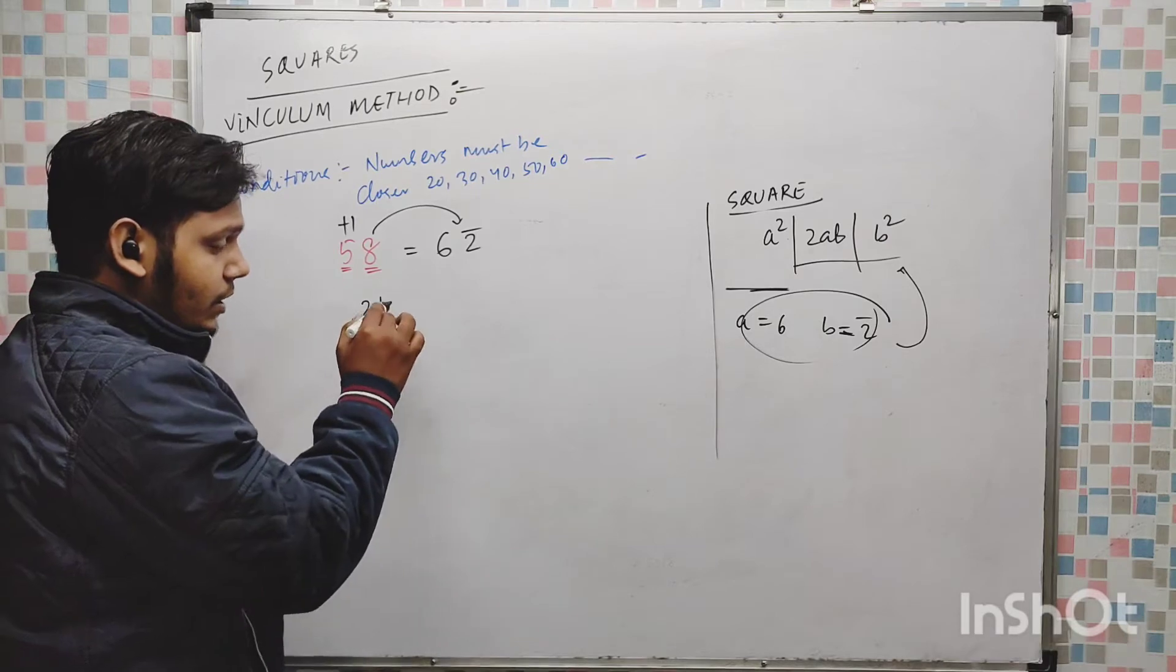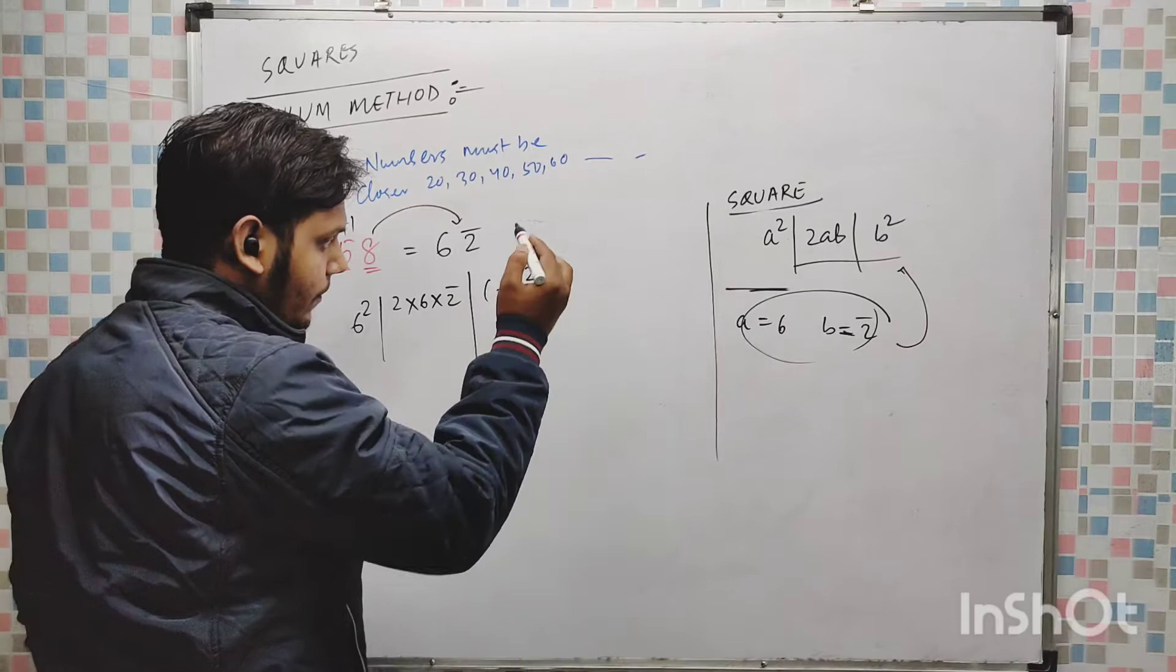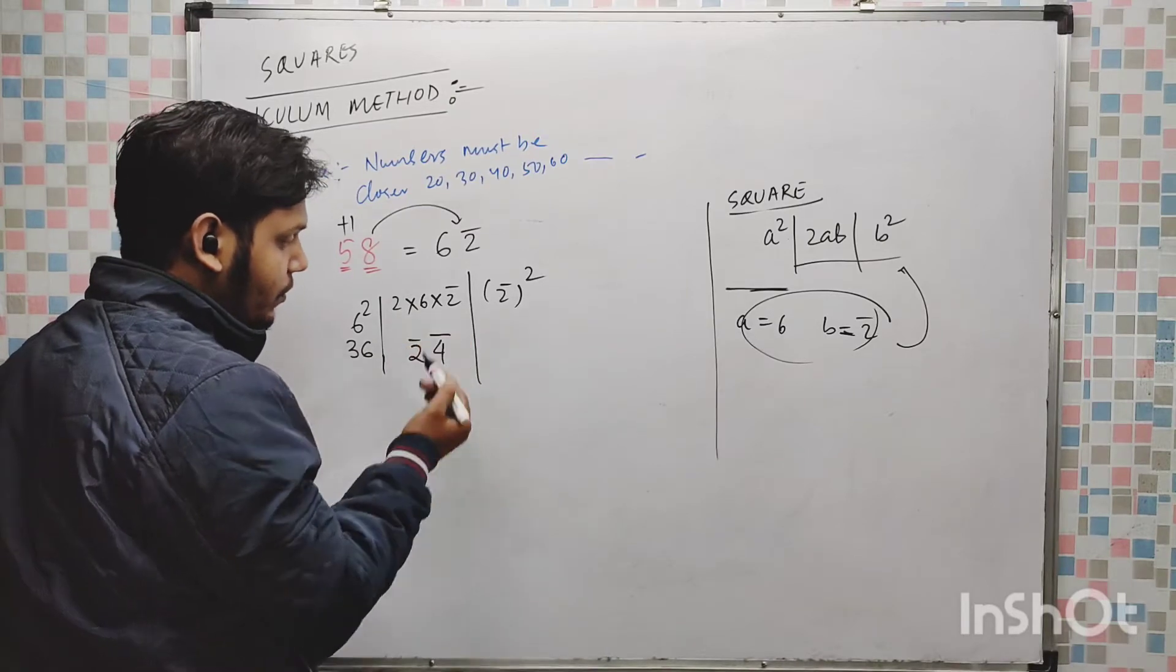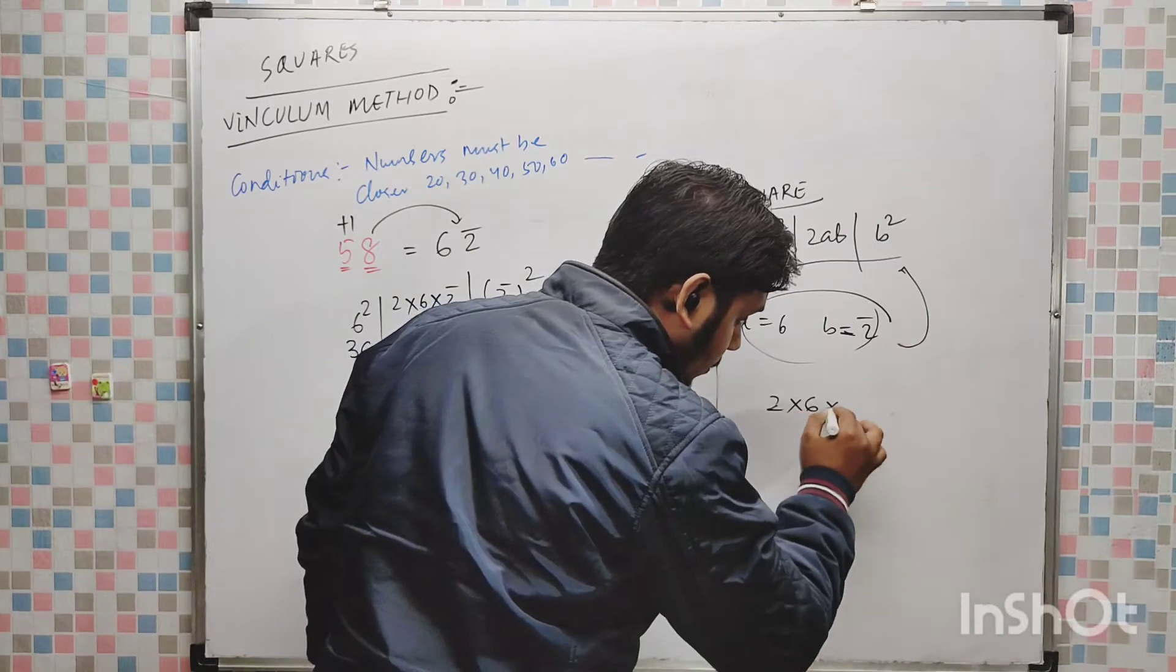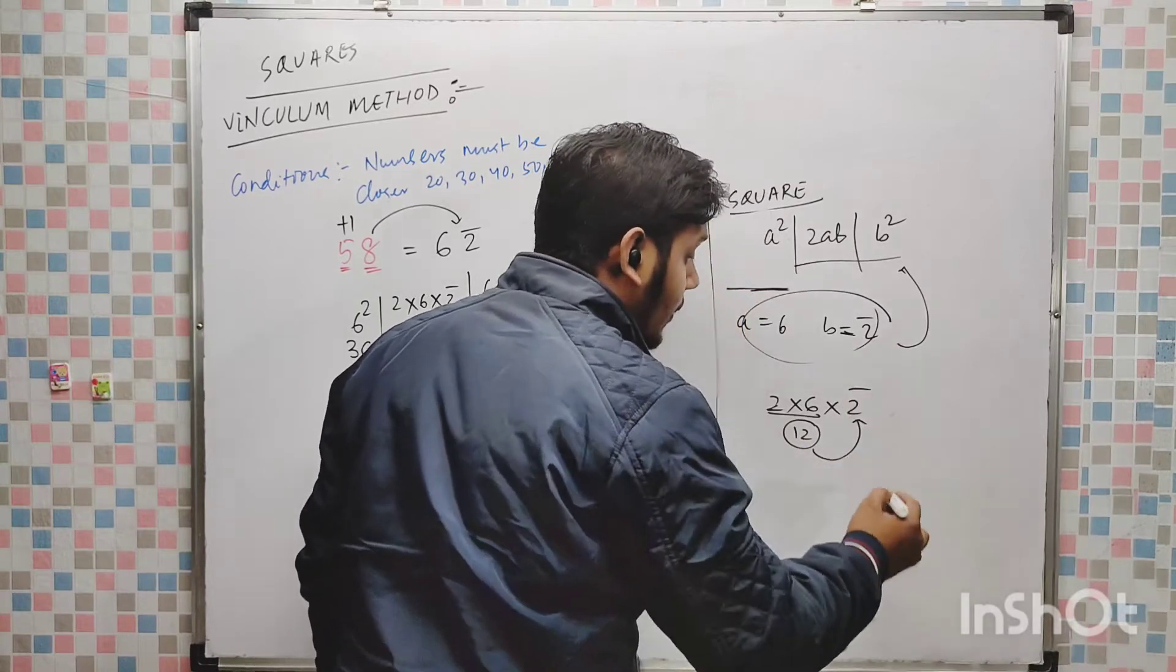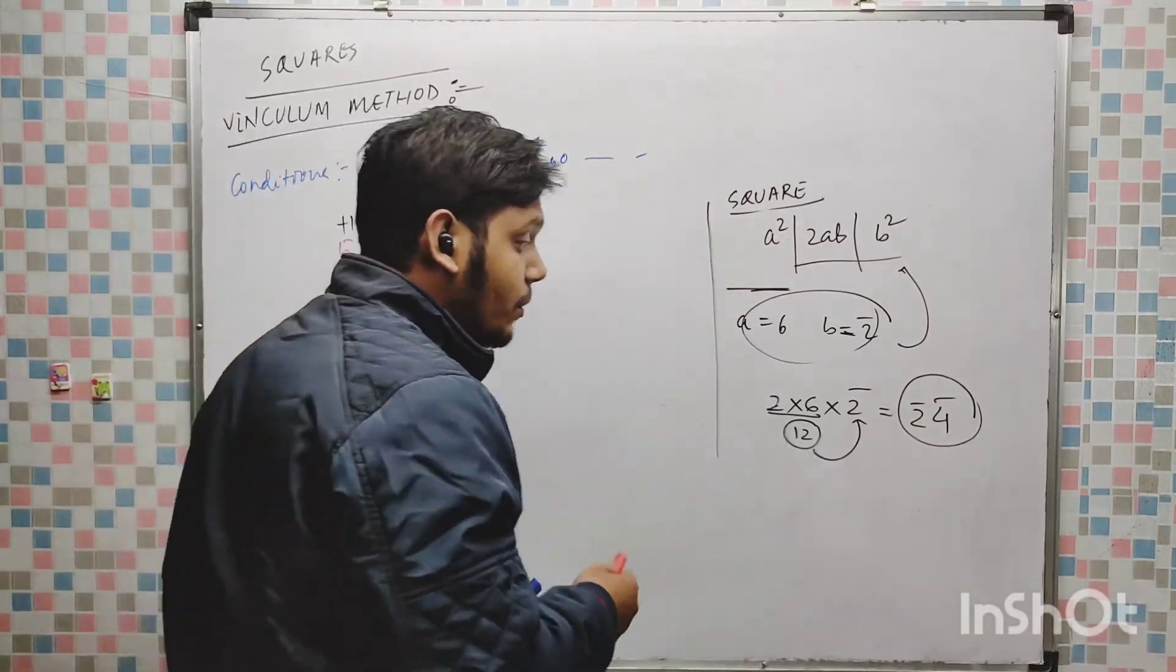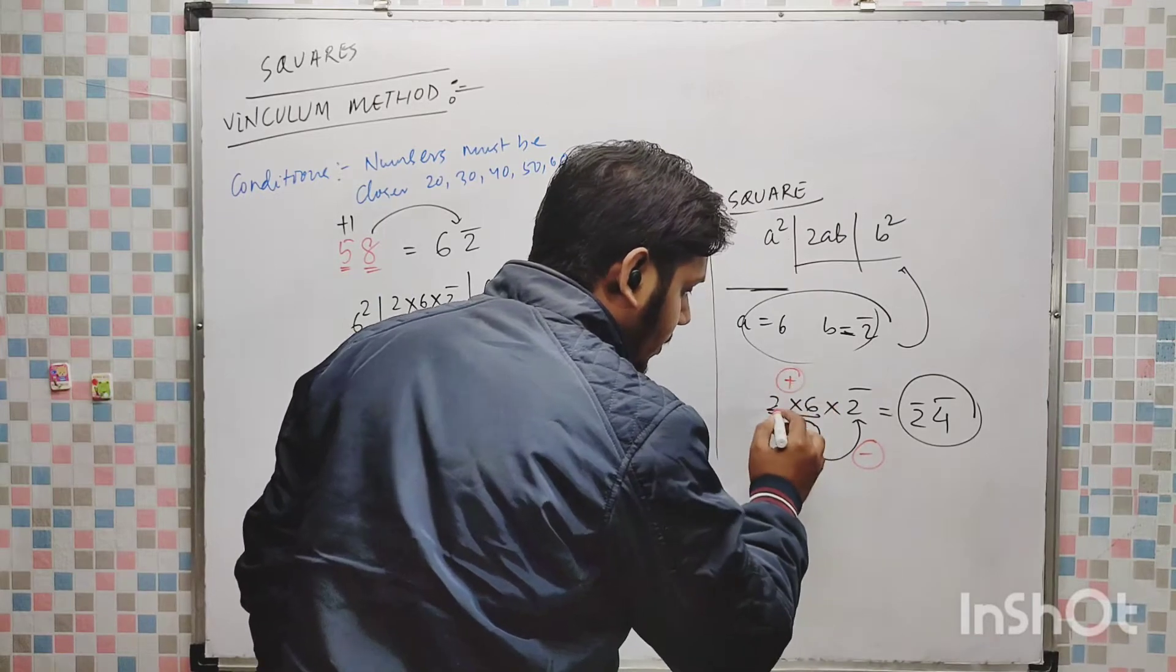6 for 6 square, then 2 into 6 into 2 bar, then 2 bar square. 6 square is 36, 2 into 6 is 12 and minus 24. So remember this part, 2 into 6 into 2 bar, 2 × 6 is 12, but this 12 when multiplied with minus 2 turns to minus 24. This part, this part it will become minus.